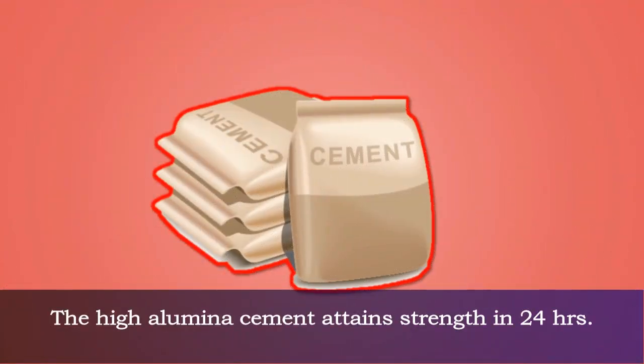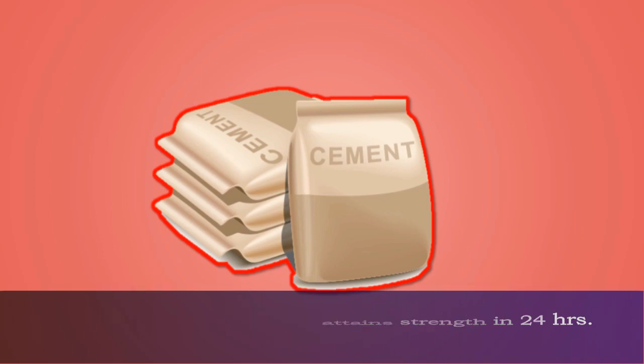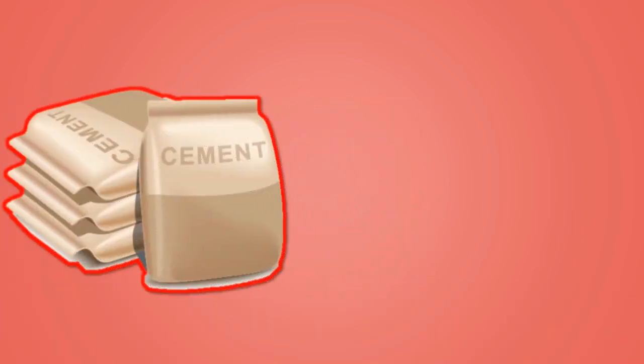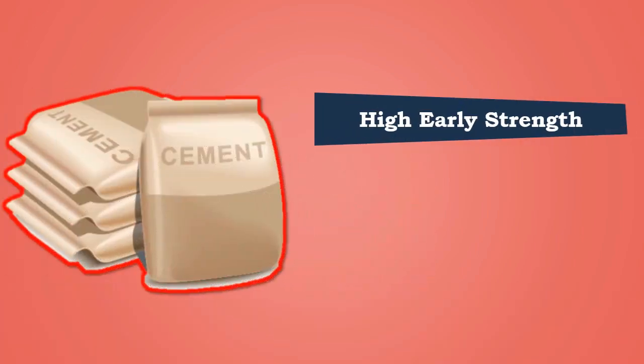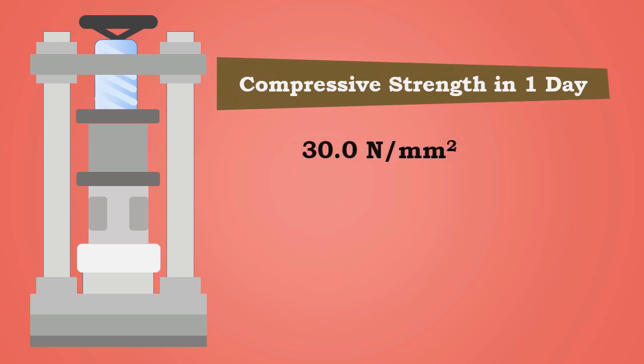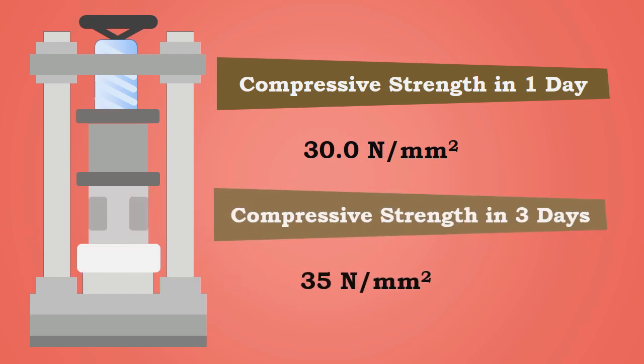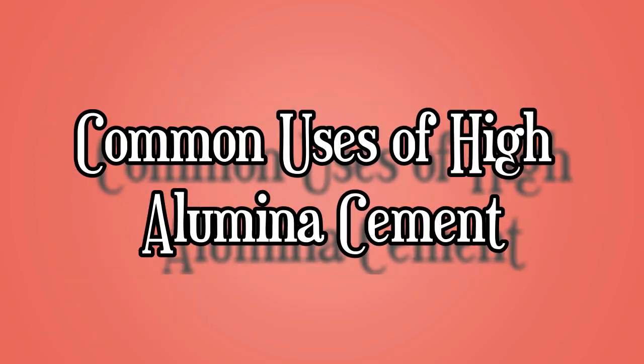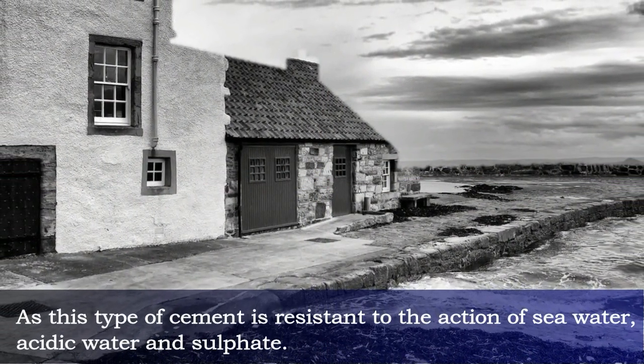High alumina cement attains strength in 24 hours, thus it achieves high early strength, high heat of hydration, and resistance to chemical attack. The compressive strength of the cement after one day is 30 Newton per millimeter squared, and after three days it is 35 Newton per millimeter squared.